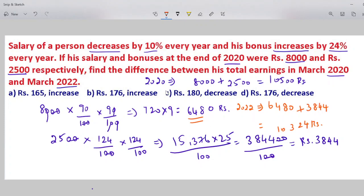In 2020, the total was 10,500. Now, the difference is 10,500 minus 10,324. So the subtraction will be 176 rupees.